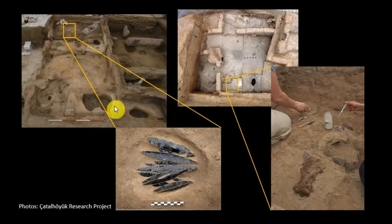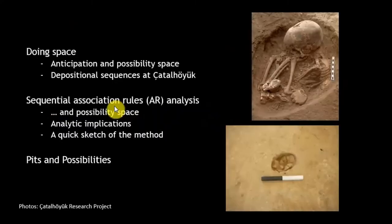My aim is to understand how depositional events help constitute built space. I'm particularly interested in the embedding of material culture — objects in Çatalhöyük houses — and particularly in cases where these deposits don't seem to fit any neat intuitive typology, where it's a very chaotic assortment of things that is difficult to work with in a static sense. I'll talk generally about doing space or making space and the role that anticipation plays, then talk specifically about sequential association rules analysis — a mathematical way of assessing links between events and sequences of events — as a way to get at anticipation, possibility space, and the temporal structure of spaces at Çatalhöyük.